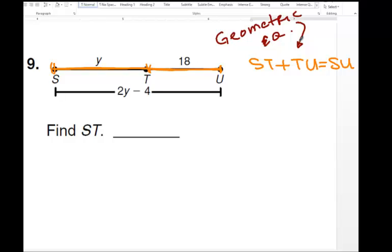Next, you are going to take whatever you know about ST, TU, and SU, and you plug it in. So ST is right here, that's Y. TU is from here to here, that's 18, so plus 18 equals SU, which is from here to all the way to the other end point, that's equals 2Y minus 4.